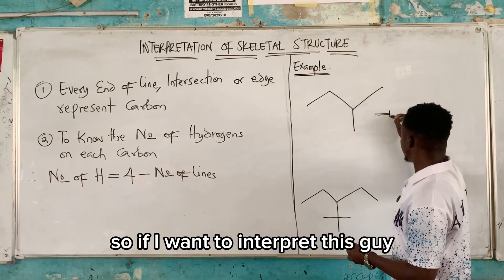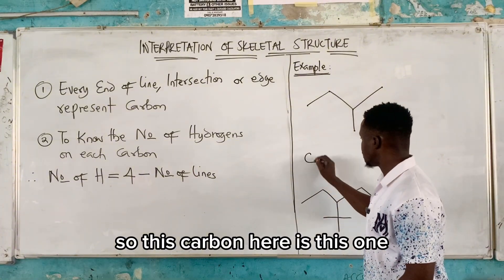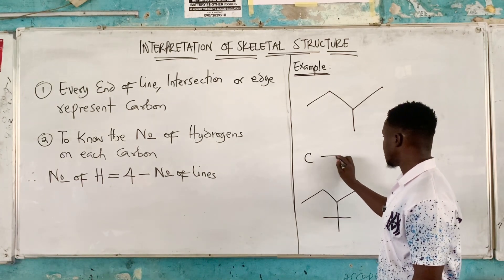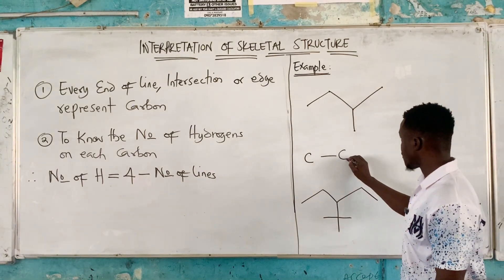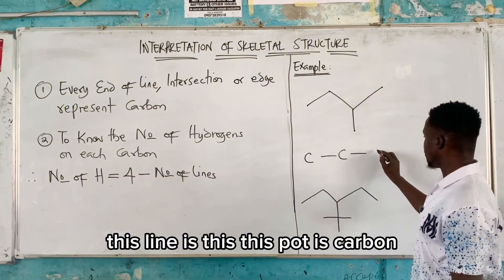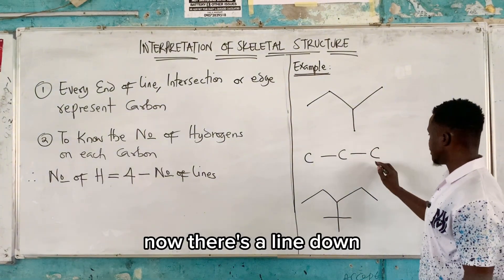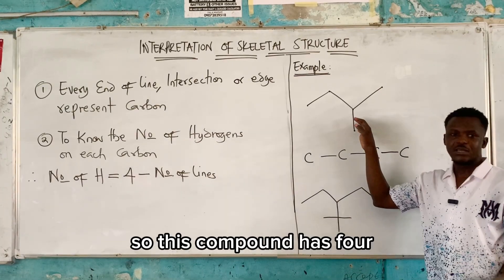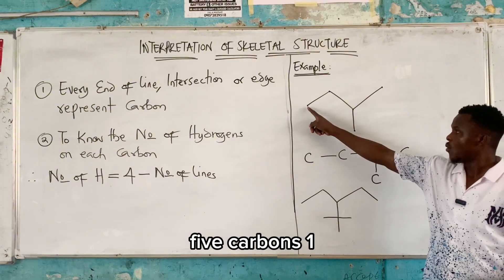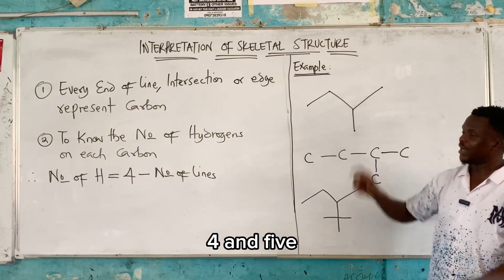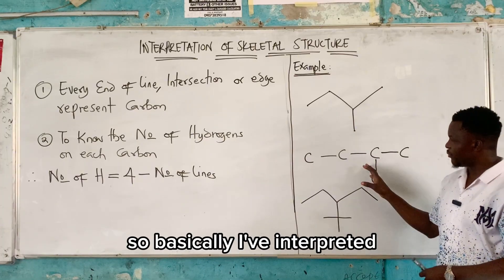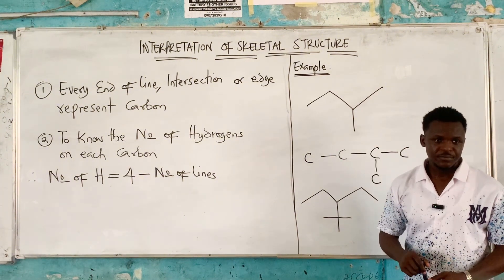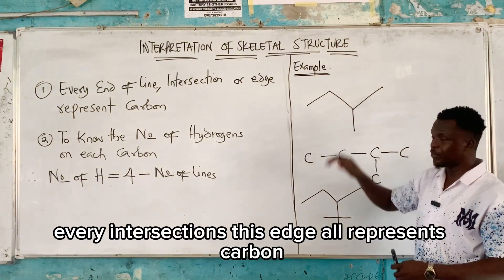If I want to interpret this compound: this is carbon here, this line connects to this carbon, this line connects to this carbon. There's a line down, and this carbon. So this compound has five carbons — one, two, three, four, and five. These points are end of lines, they are all carbons. Every intersection and edge also represents carbon. These lines stand for bonds.